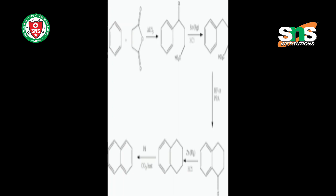The next reaction is nitration. Nitration of tri-phenyl methane, carried out in the presence of nitric acid and sulfuric acid, gives tris(4-nitrophenyl)methane as the trinitro derivative. In this reaction, nitric acid reacts with the hydrogen present on the benzene ring; a water molecule is eliminated and the NO₂ group is added to the benzene ring.